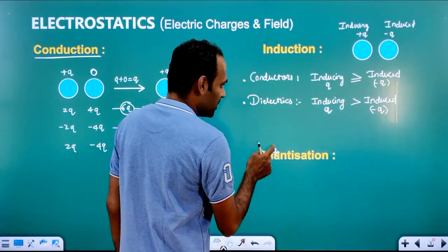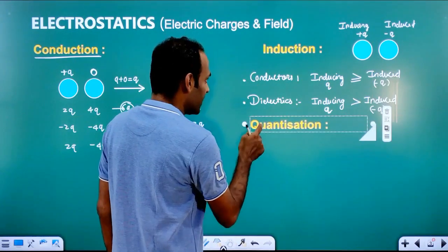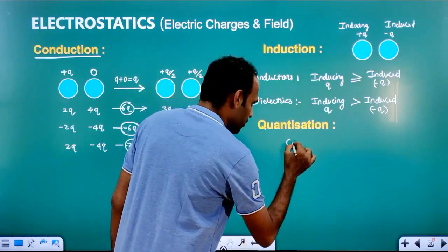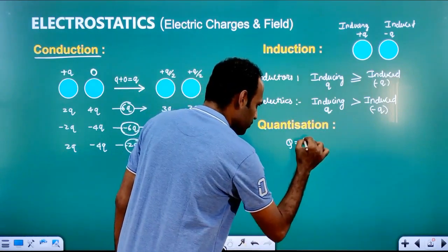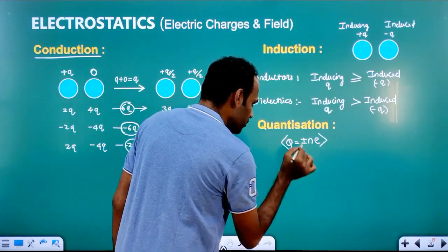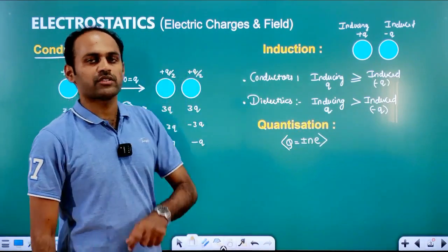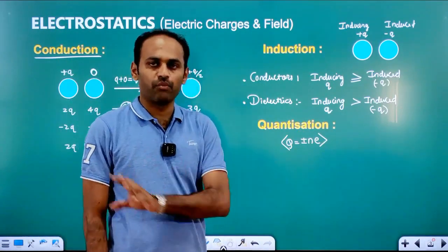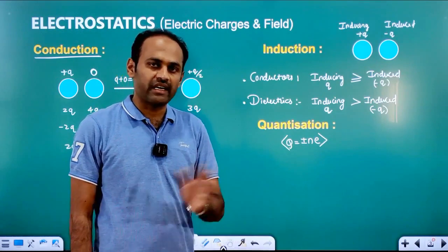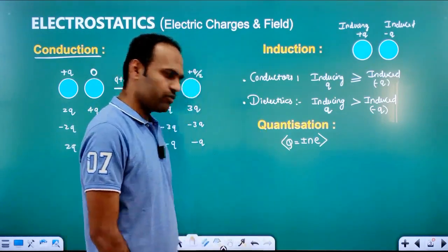Next, we will see about quantization. Quantization is clearly and easily understood. What is quantization? Quantization is the formula — we have to use q is equal to plus or minus n into e. We have to use this formula whenever the number of charges added, or the number of charges removed, or the number of electrons present is given.